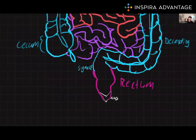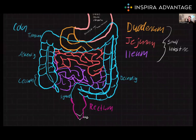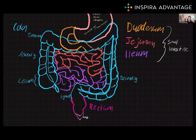The large intestines have several important functions. The main ones are that it absorbs water and electrolytes from the indigestible material, and it forms feces. It also has a diverse population of bacteria, which play a role in the fermentation of undigested carbohydrates. The large intestine also receives secretions from the liver, which contain bile that helps emulsify fats and make them easier to be absorbed by the body.